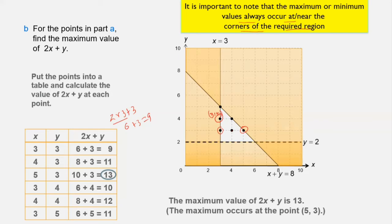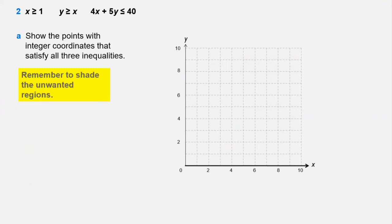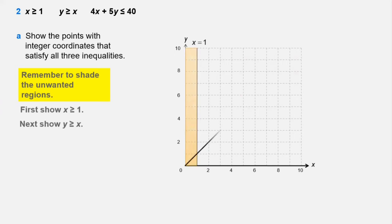Let's take another question with three inequalities: x ≥ 1, y ≥ x, and 4x + 5y ≤ 40. First, draw the line x = 1 as a solid line because of the greater than or equal to sign. Next, plot y = x — using points (1,1) and (2,2) — also as a solid line.